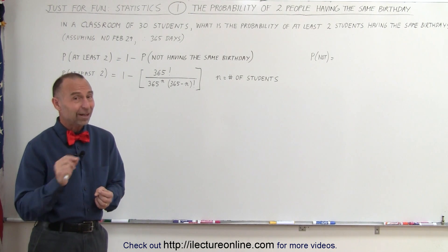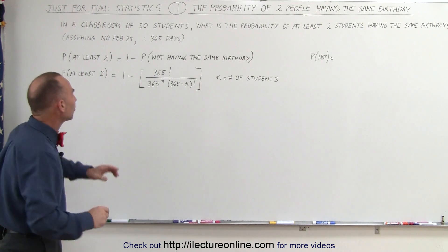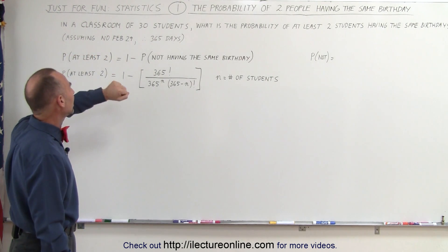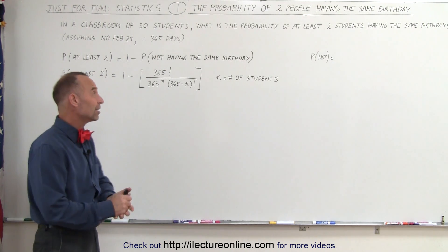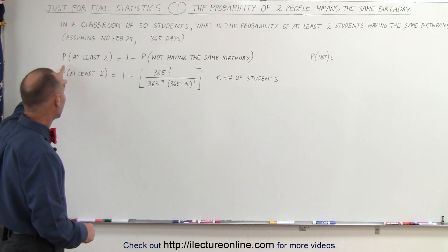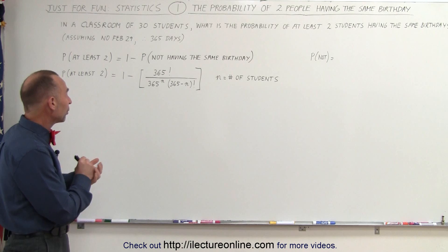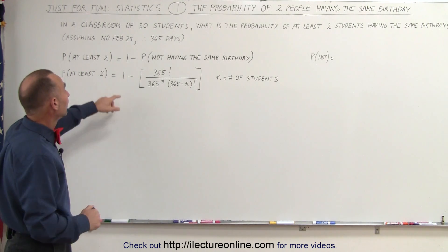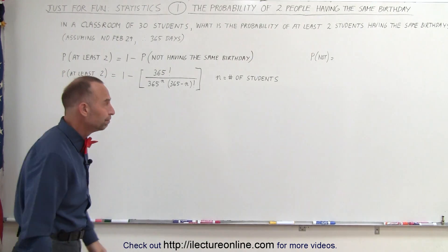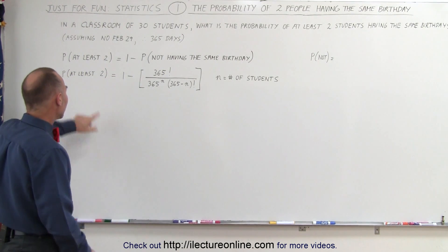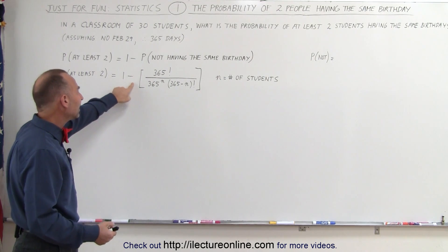It turns out it's not as small as you think. The equation that we use — and we're going to make the assumption that there's no February 29th to make things a little bit easier, so we're just working on the 365-day year — goes as follows. The probability that there's at least two people in the room with the same birthday is 1 minus the probability that nobody has the same birthday in the room.